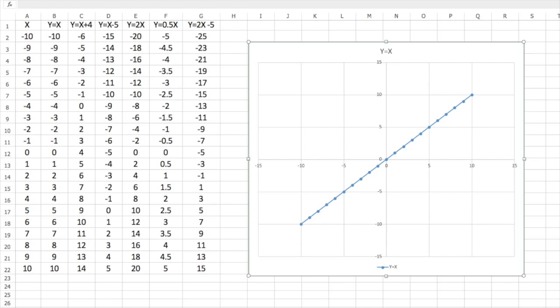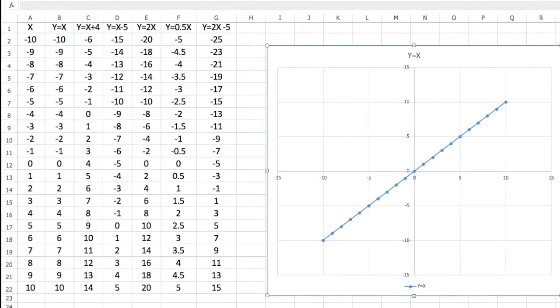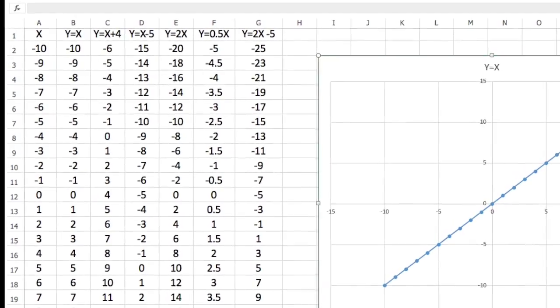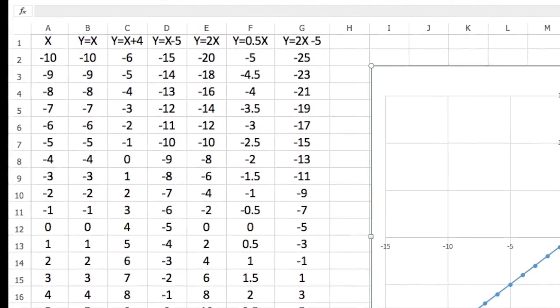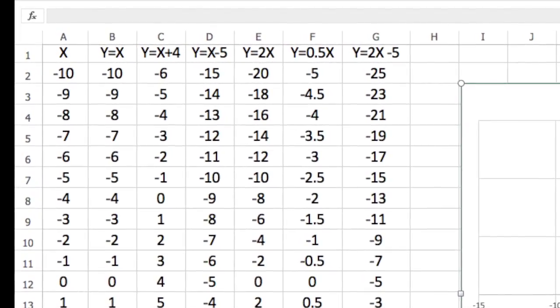I'm going to draw a series of five straight line graphs. These graphs are according to the equations at the top of these columns. So it's y equals x, y equals x plus 4, y equals x minus 5, y equals 2x, y equals a half x, and y equals 2x minus 5.